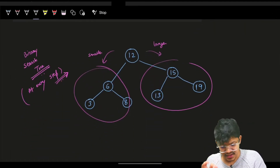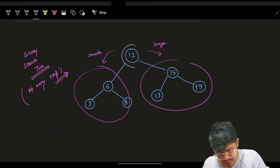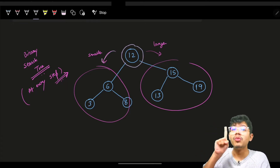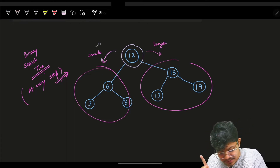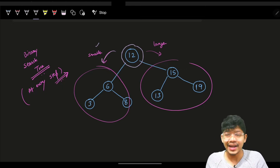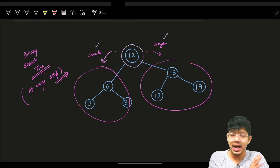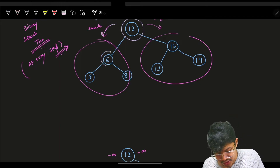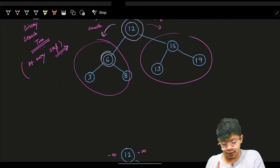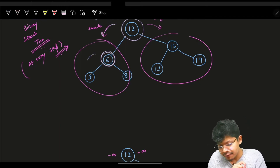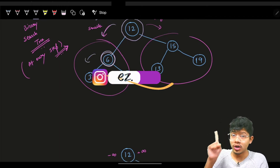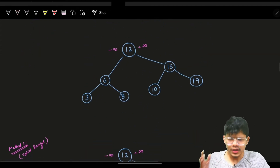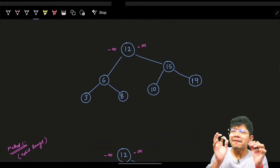If we have a specific node, all the nodes on the left should be smaller than it, and all the nodes on the right should be larger. The same condition should hold for every node in the tree.